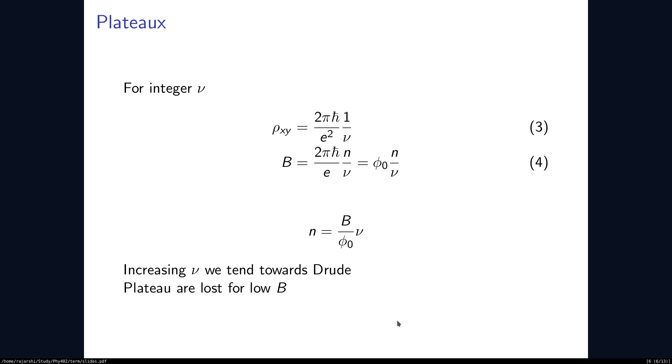The features of this graph are captured by these equations. Rho xy is inversely proportional to an integer and so is the magnetic field. In this formula, if we increase nu, then we get B and rho to be continuous because nu is very small.